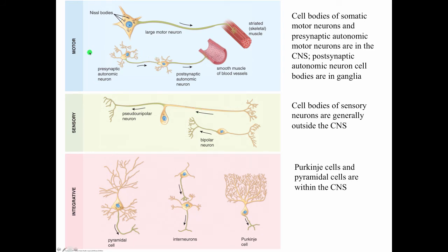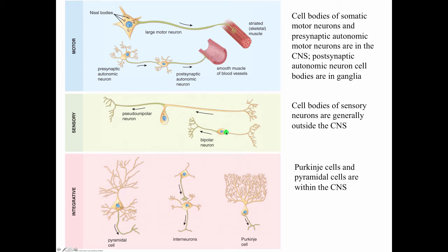We can also classify neurons as motor neurons, sensory neurons, and integrative neurons. For somatic motor neurons and presynaptic autonomic motor neurons, the cell bodies are in the central nervous system. For a postsynaptic autonomic neuron, the cell body will be in a ganglion. Sensory neuron cell bodies are mostly located outside the central nervous system, generally in ganglia — a pseudo-unipolar neuron cell body would be in a ganglion. Bipolar neurons are found commonly in the retina.